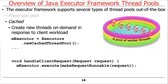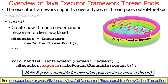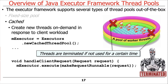The next type is the cached thread pool, which creates new threads on demand in response to client workload. You use the NewCachedThreadPool factory method in the Executors utility class, which creates a new cached thread pool with no pre-allocated threads. When a request comes in, it either reuses an existing idle thread or creates a new one. If a thread is created but not accessed for a certain amount of time — like a minute — the thread pool automatically terminates it, so the pool grows and shrinks dynamically depending on workload.